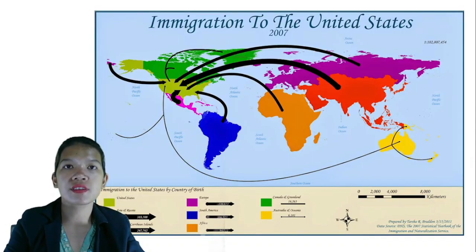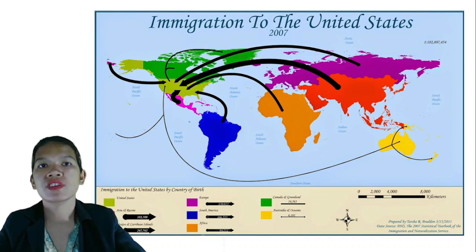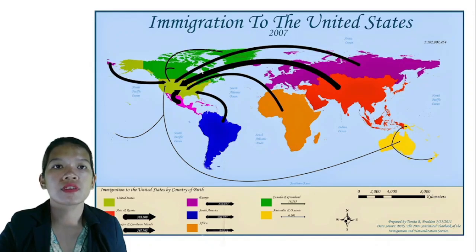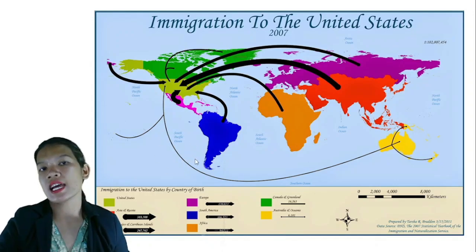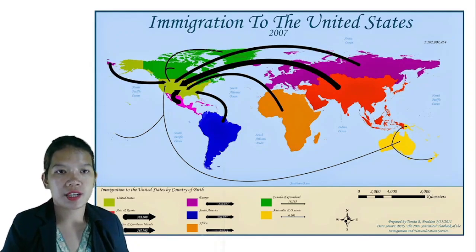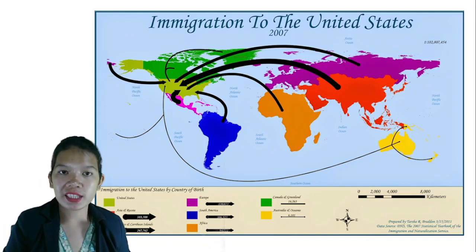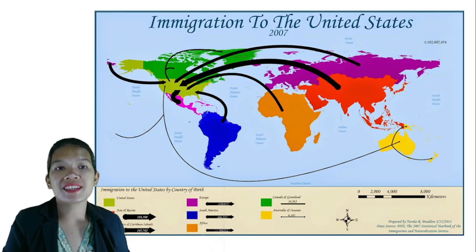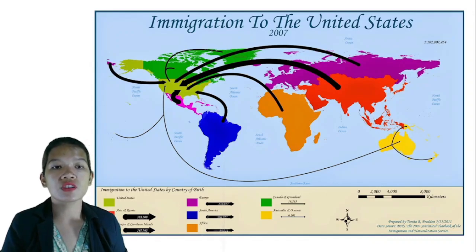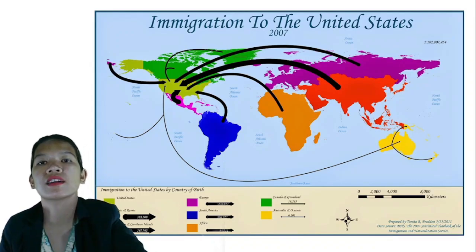The top receiving country is the United States of America. It has been the main country of destination for international migrants since 1970. The number of foreign-born people residing there has more than quadrupled from less than 12 million in 1970 to 51 million in 2019. Germany is the second top destination for migrants, with an increase from 8.9 million in 2000 to nearly 16 million in 2020.